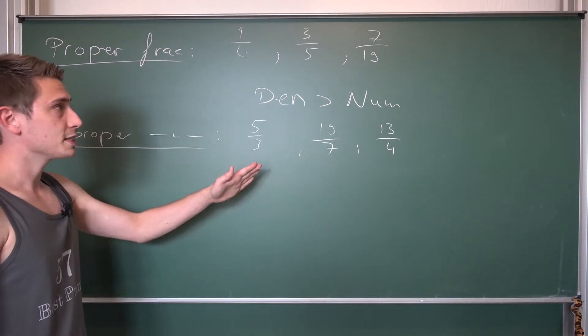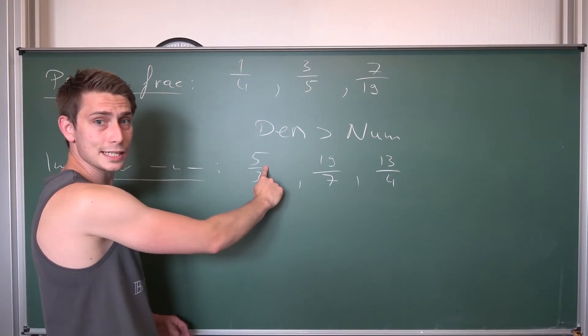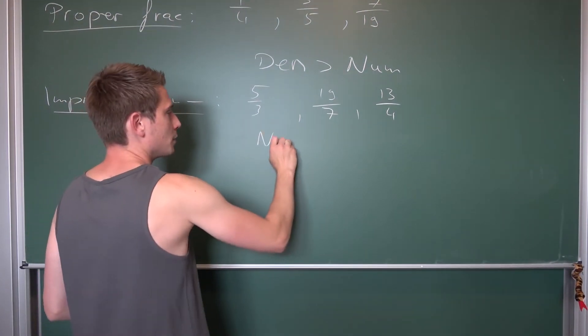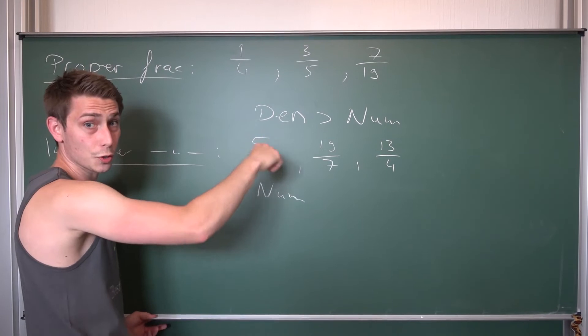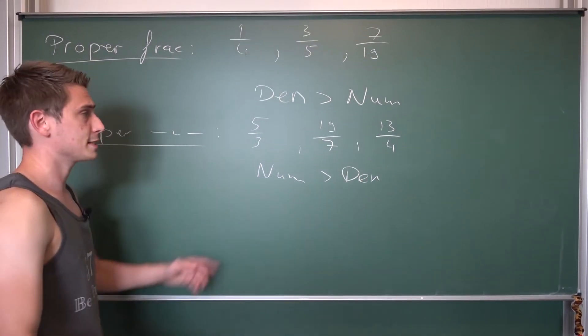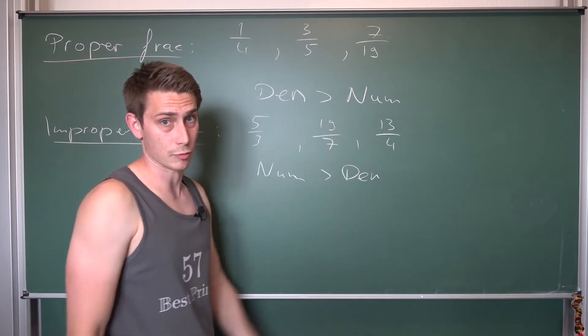What is the difference here? The key difference between improper and proper fractions? Well, our numerator in this case is always strictly greater than our denominator. So it's basically just this order relation switched around. The numerator is greater than our denominator. I hope you can see this. 5 is greater than 3, 19 is greater than 7, 13 is greater than 4.